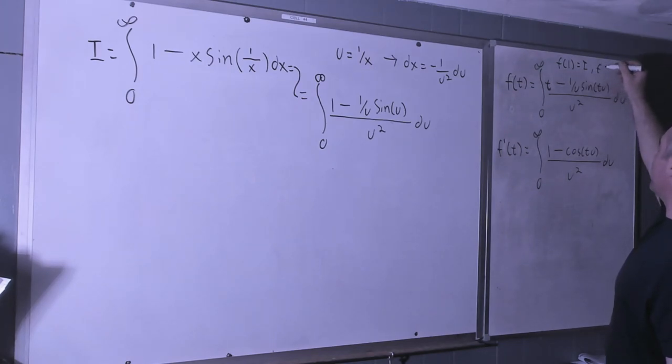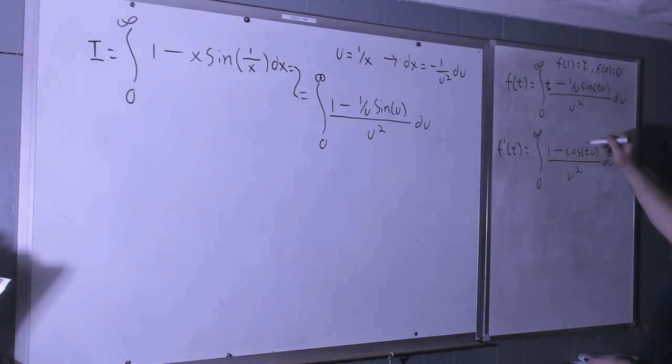Also that f of zero, minus zero over anything is zero, integral of zero is zero. Also note that f prime of zero also become one minus one.